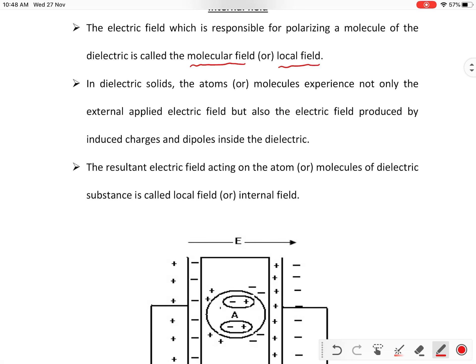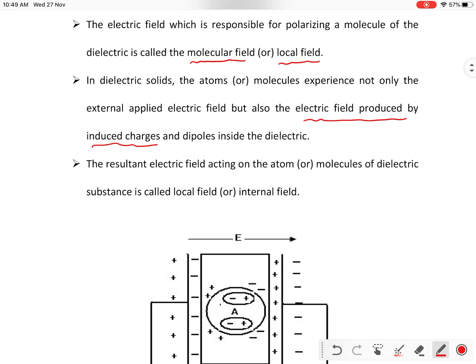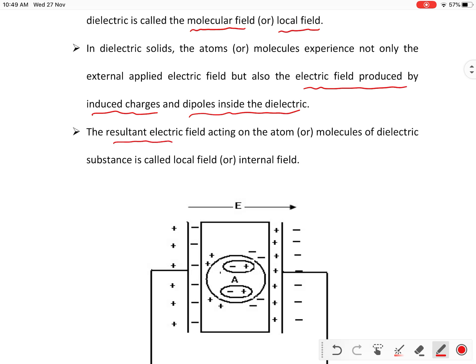If you take a dielectric material, dielectrics are made up of atoms and molecules. These atoms and molecules not only experience the external electric field — they experience some more electric fields, those electric fields are produced by induced charges and also the dipoles inside the dielectric. The resultant of all electric fields responsible to polarize a molecule is called the local field or internal field.